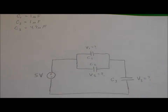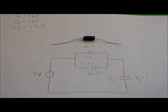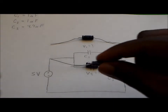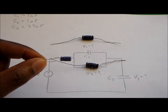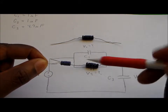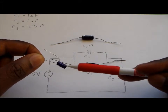We're going to lay these capacitors out on the paper so that they represent or resemble the circuit. We have capacitor 1, capacitor 2, and capacitor 3, which is the 4.7 microfarad capacitor. That 4.7 microfarad capacitor happens to be a polarized capacitor, and it has a negative terminal and a positive terminal.